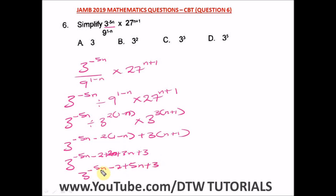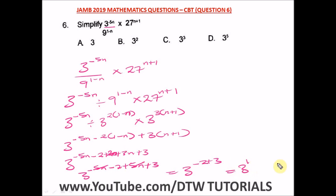So minus five n and plus five n cancel out. We are left with three raised to the power of four minus two plus three, which equals three to the power one. Three to the power one is just three. So our answer is three, and the correct option is option A.